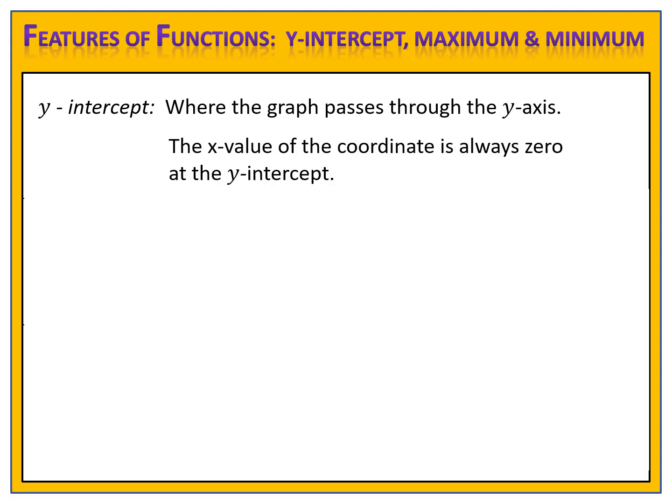Another important note is that when we write the coordinates of the y-intercept, the x value of the coordinate is always zero. In other words, when you write the point, you will have zero comma and then the y-intercept.